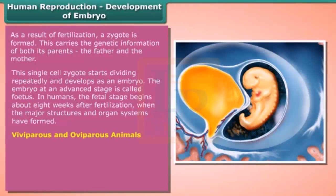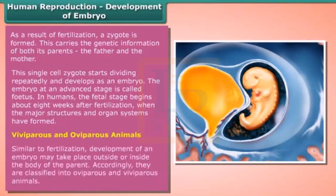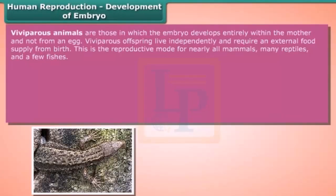Similar to fertilization, development of an embryo may take place outside or inside the body of the parent. Accordingly, animals are classified into oviparous and viviparous animals. Viviparous animals are those in which the embryo develops entirely within the mother and not from an egg. Viviparous offspring live independently and require an external food supply from birth. This is the reproductive mode for nearly all mammals, many reptiles, and a few fishes.